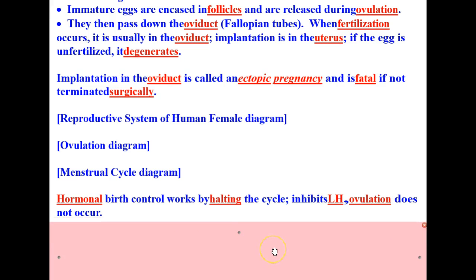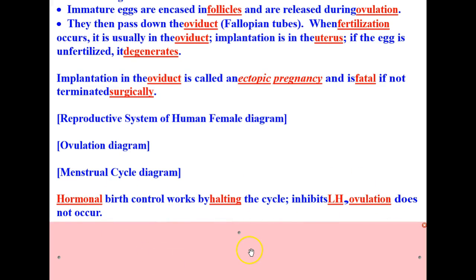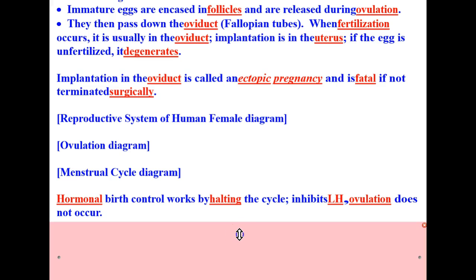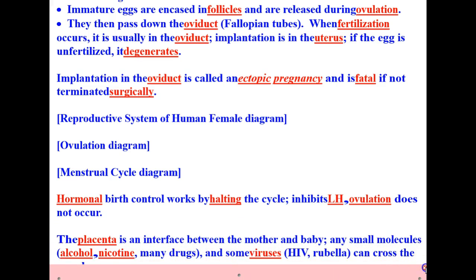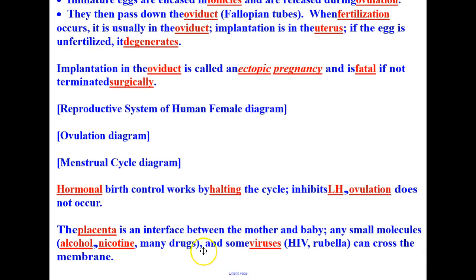Hormonal birth control works by halting the menstrual cycle. This inhibits LH — luteinizing hormone — and ovulation does not occur. We'll discuss more on this in a later lesson on the reproductive cycle. The placenta is an interface between the mother and the baby. Any small molecules, including alcohol, nicotine, and other drugs, and some viruses such as HIV and rubella, can cross the membrane from the mother to the baby. So it's important to take that into consideration when there's a pregnancy.